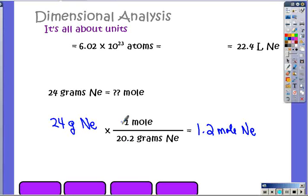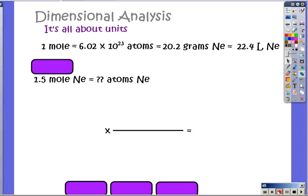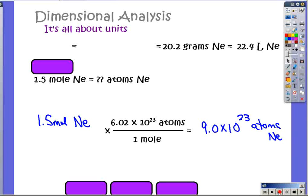It's the only one that changes is the grams, and that number we get from the periodic table. Everything else stays the same. One mole, 6.02 times 10 to the 23rd atoms, 22.4 liters. Those numbers always stay the same. Only the grams will change. Let's do the next one. And here's my answer.